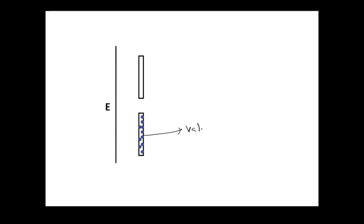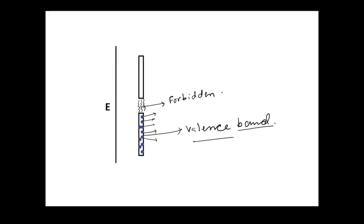In semiconductor band theory, the valence band is the highest occupied band. Above it is the conduction band. Between them there is a forbidden zone — a band gap — where, by quantum rules, electrons cannot exist.